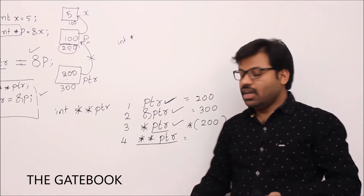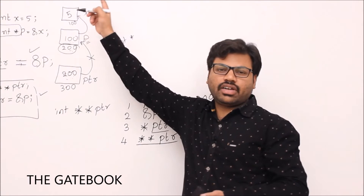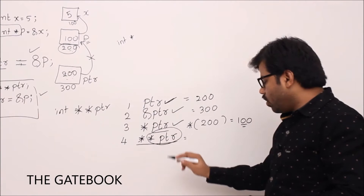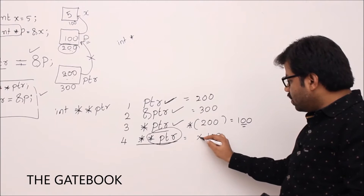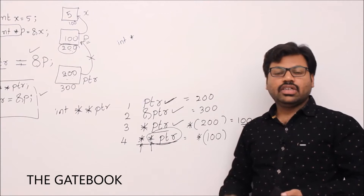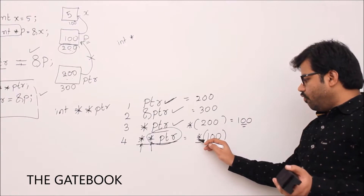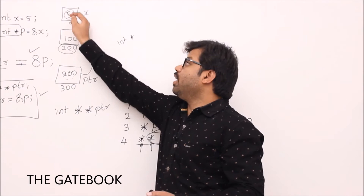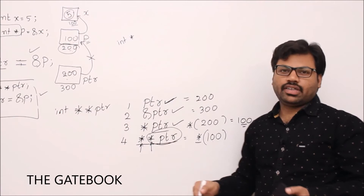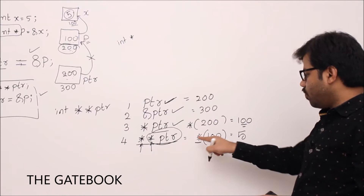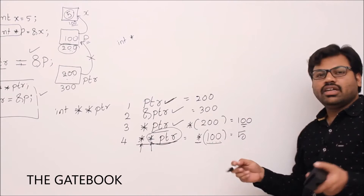Now the fourth one: double star ptr. It is used to refer to x. Your compiler first evaluates star ptr, which gives 100. Then we apply the remaining star — this is called dereferencing two times. Double pointers can be dereferenced two times. So we compute value at 100. Value at 100 is 5. Always, star means value at a given memory address.